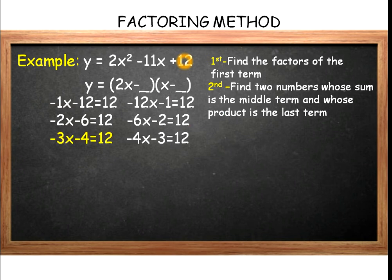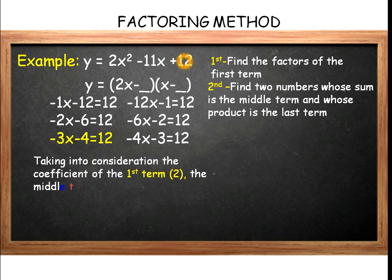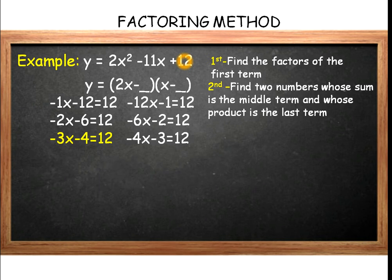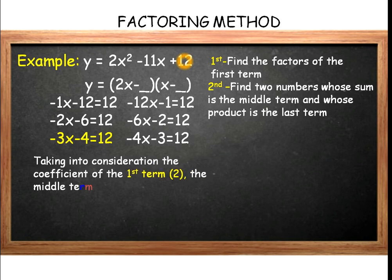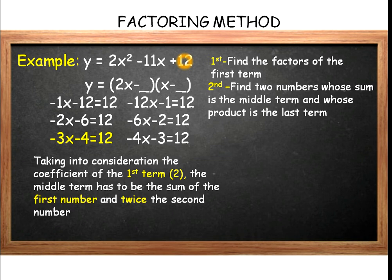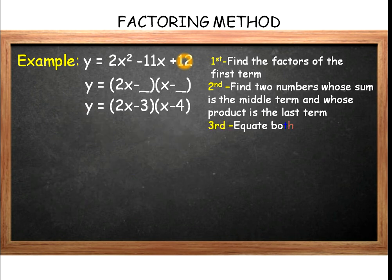We have to consider the coefficient of the first term, which is 2. Taking that into consideration, the middle term has to be the sum of the first number and twice the second number. The only possible answer is negative 3 and negative 4, since twice negative 4 is negative 8, and negative 8 plus negative 3 gives us the middle term of negative 11. Equating both factors to zero, we have 2x minus 3 equals 0 and x minus 4 equals 0.